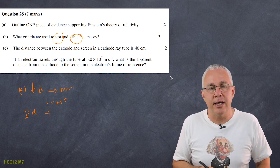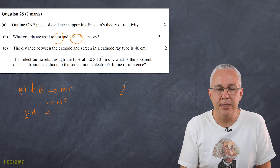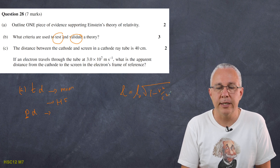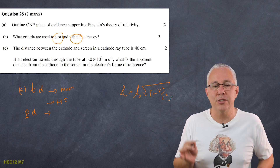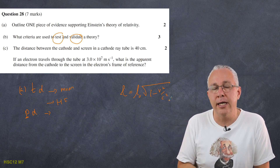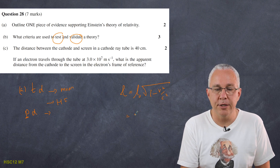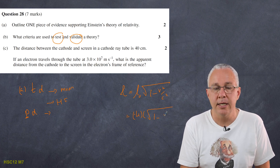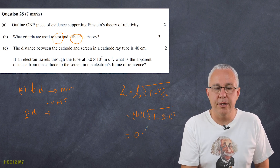The final part of question 28: the distance between the cathode and screen is 40 centimetres, and the electron travels at 3×10⁷ m/s. This is a length contraction situation. The contracted length L equals L₀ times the square root of 1 minus v²/c². The electron is in a separate frame of reference moving within the tube. Substituting: 0.4 times the square root of 1 minus (0.1)² — since the speed is one-tenth c — gives approximately 0.398 metres.